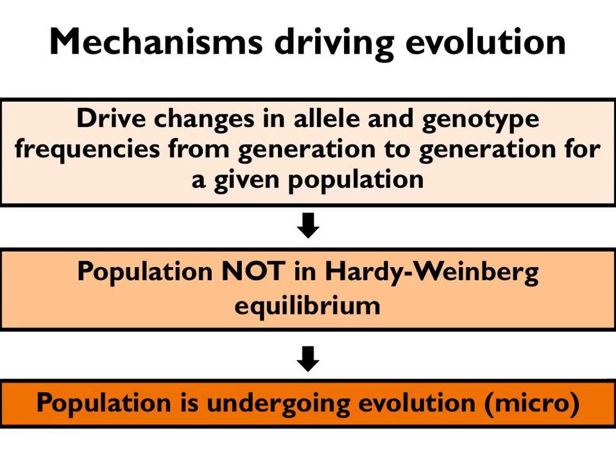We use the Hardy-Weinberg equation to quantify allele and genotype frequencies. If mechanisms drive changes in allele and genotype frequencies from one generation to the next generation in any population, then you would say that that population is not in Hardy-Weinberg equilibrium. Allele frequencies and genotype frequencies are changing, and if they are changing, then that population is undergoing evolution.